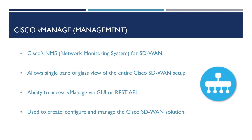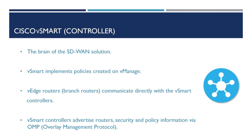We'll start off by taking a look at the vManage component. This component is basically the network monitoring system for the entire SD-WAN solution. It provides us with a single pane of glass view that allows us to view and manage the entire SD-WAN setup. We can control vManage by using either the graphical interface in a web browser or via REST API. Within vManage, we create the device configuration, push configuration to devices and manage the SD-WAN solution as a whole. The vManage application can be hosted locally on-premise or within the cloud.